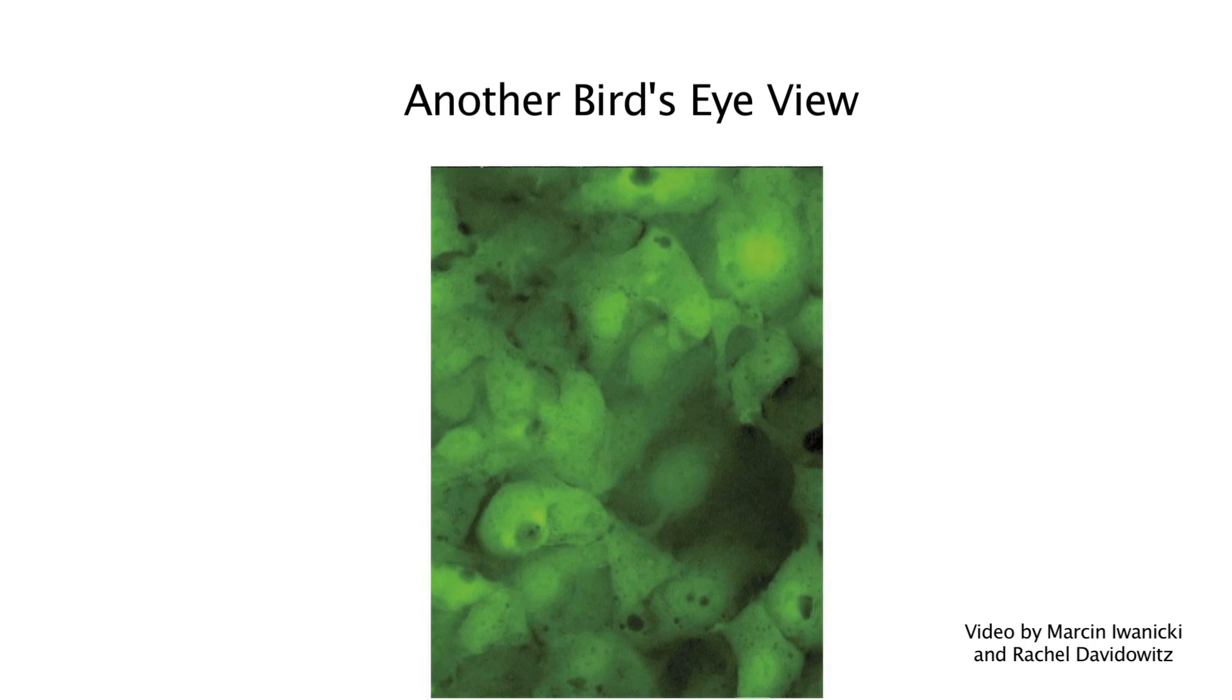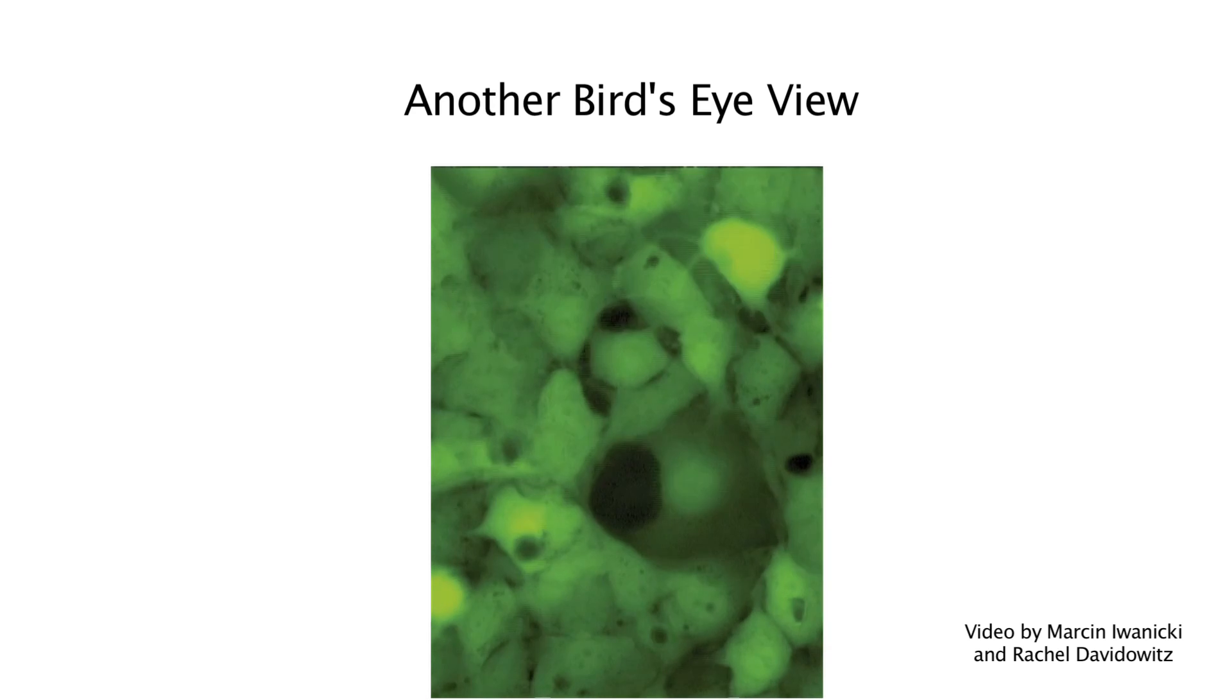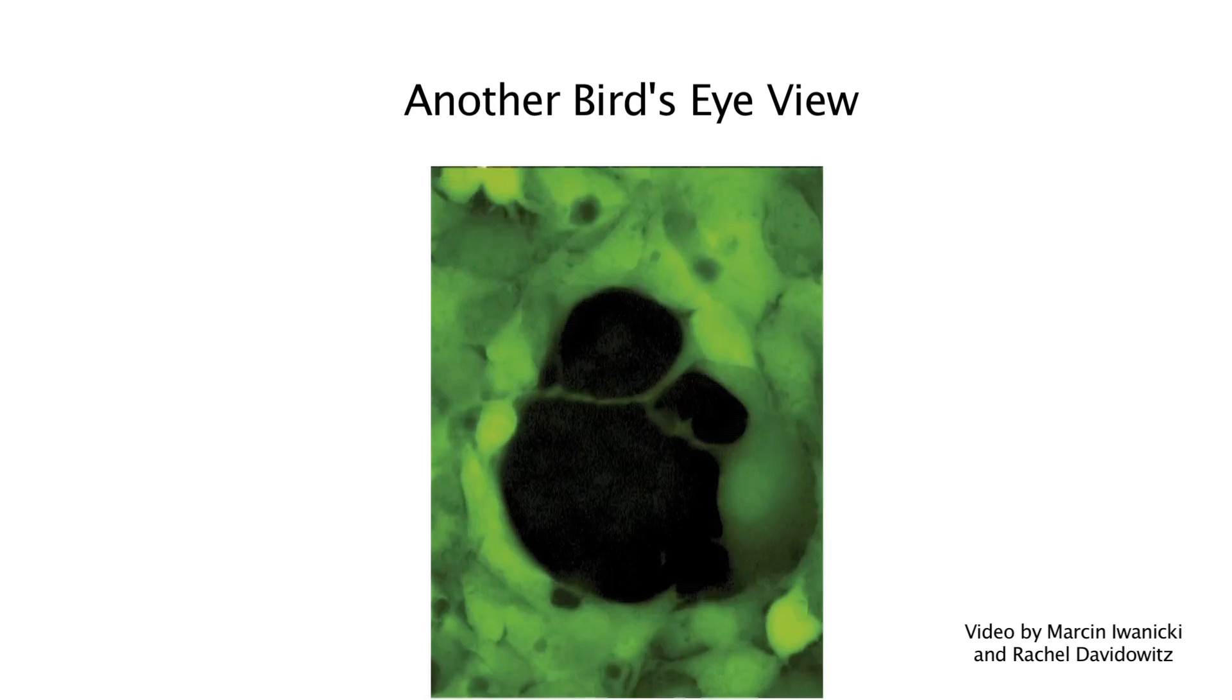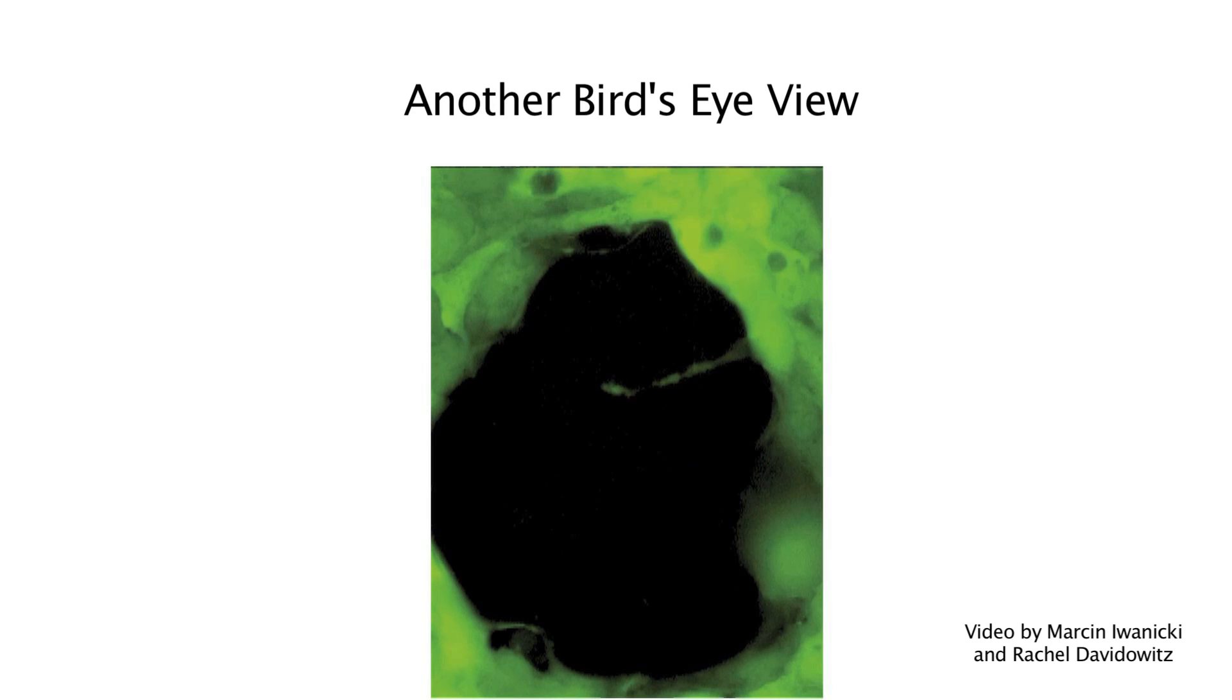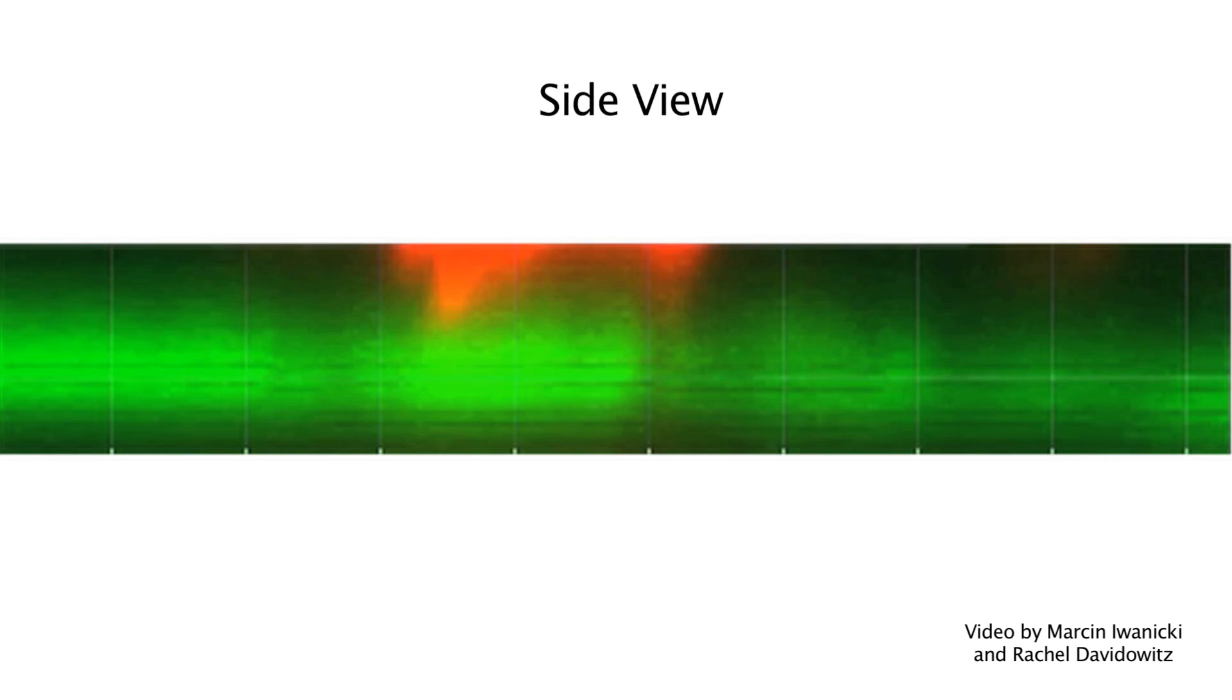Here's another bird's eye view. This time, the mesothelial cells are labeled green so that you can see the hole that forms. Here's a side view of the process. The cancer cells are in red, and the mesothelial cells are in green.